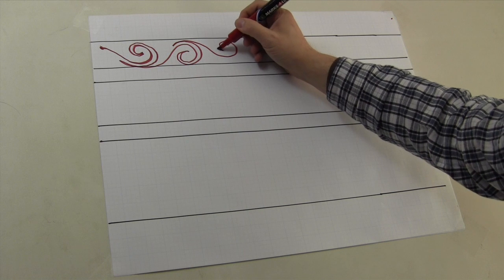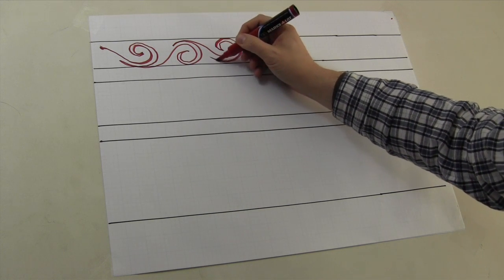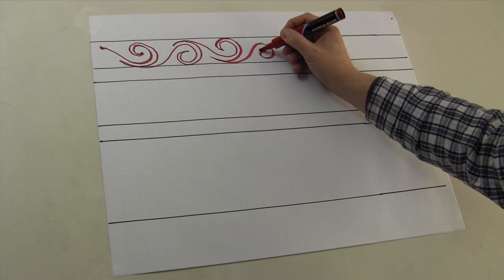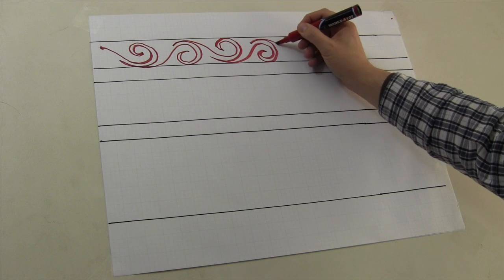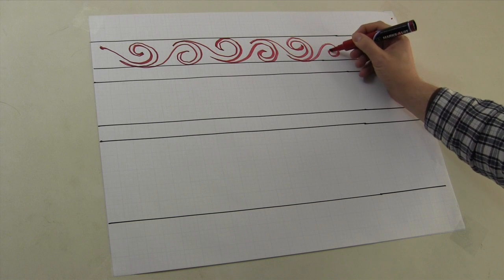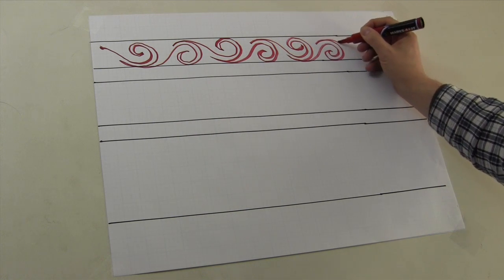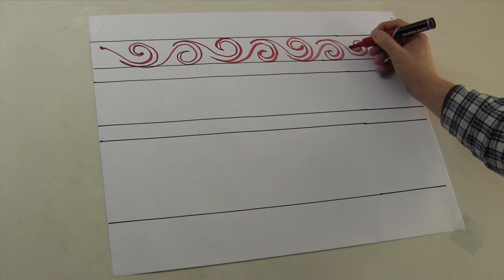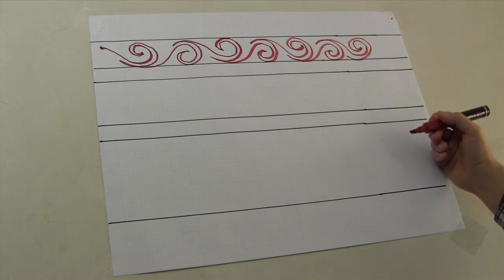So again we're up, now I'm going to echo around to the back of the head, swirl down, echo around to the back of the head, swirl up, echo around to the back of the head, swirl down, echo around to the back of the head, swirl up, all the way across your paper as you practice.